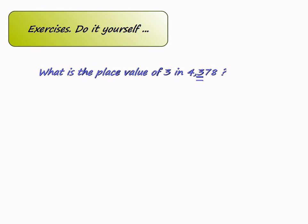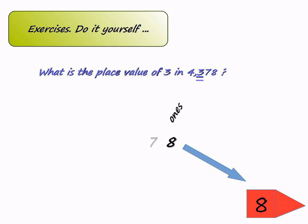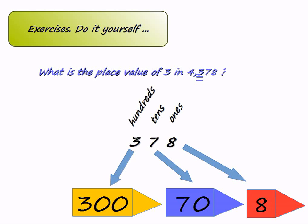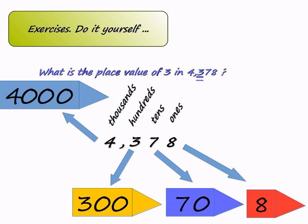What is the place value of 3 in four thousand three hundred seventy-eight? Eight is in the ones place, so its place value is 8. Seven is in the tens place, so its place value is 70. Three is in the hundreds place, so it is worth three hundred. And finally four is in the thousands place, so its place value is four thousand.